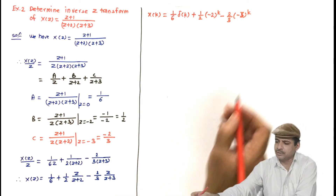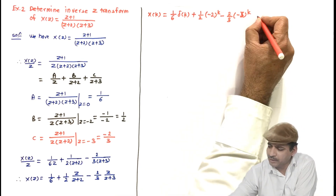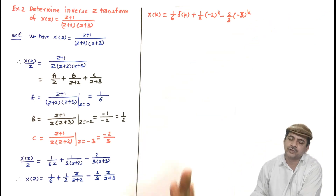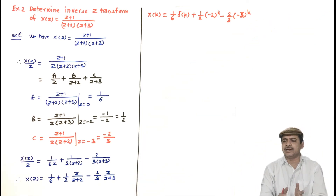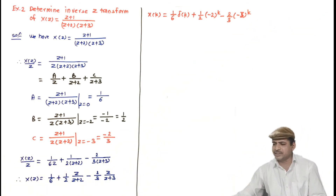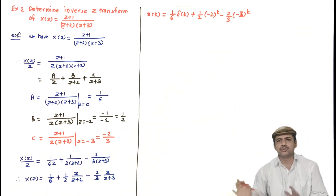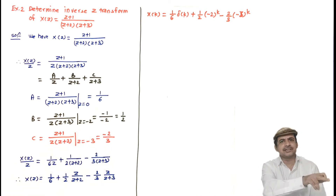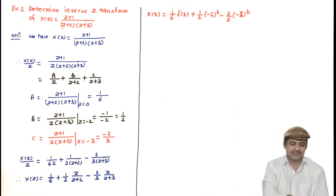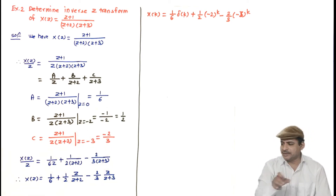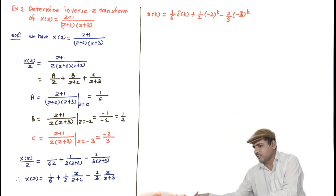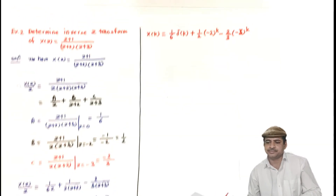This is valid for K greater than or equal to 0. As it is a unilateral Z-transform there is no need to mention it explicitly, but X of K equals 0 for K less than 0.